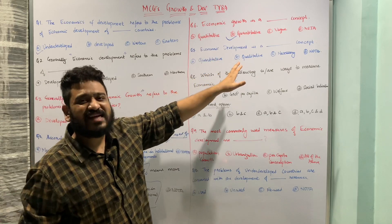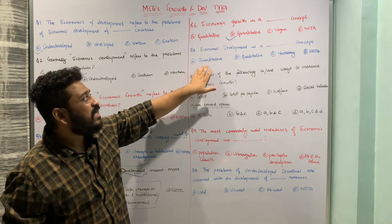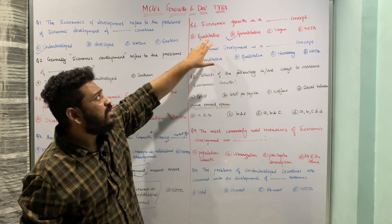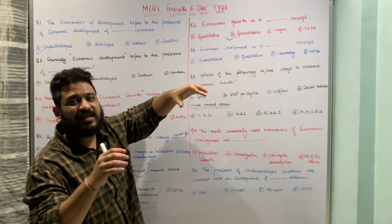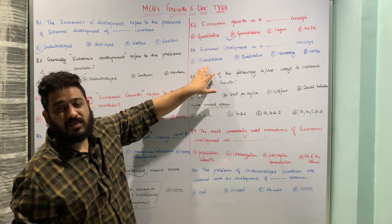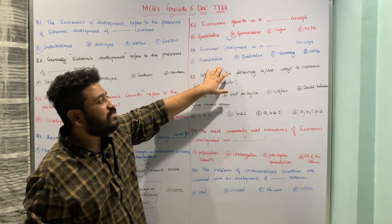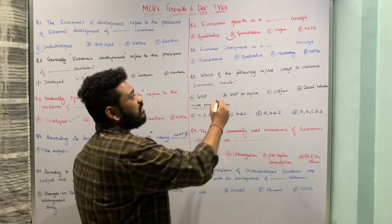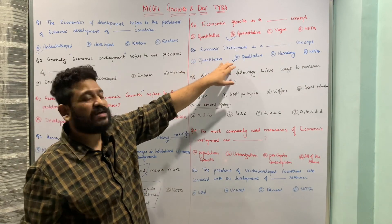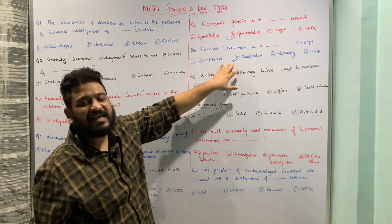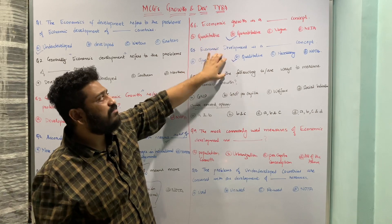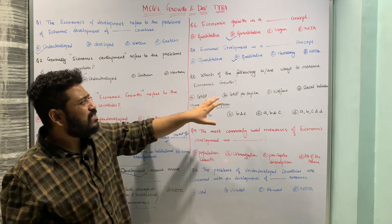The next question: 'Economic development is a ___ concept.' The options are: quantitative, qualitative, necessary, or none of the above. On the contrary to economic growth, economic development is a qualitative concept, so option B is the correct answer. Indicators like the Human Development Index or the Physical Quality of Life Index fall under economic development.